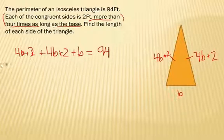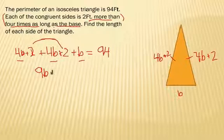Now, I'm going to go ahead and combine all my like terms. I have a 4B there, a 4B there, and a B there. That's 8B plus 1, 9B. And then I have this 2 and that 2, which is going to give me 4. So, 9B plus 4 equals 94.